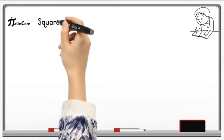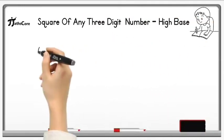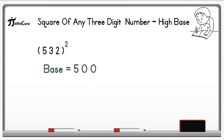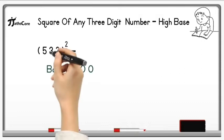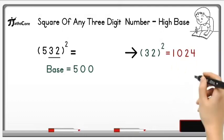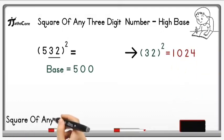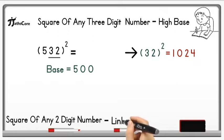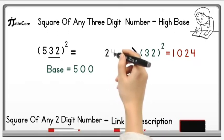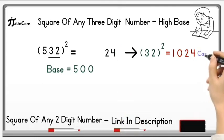Let's take one more example on it. Example is 532 square. For 532, base is 500. So first of all, take unit and tens place digit together and find out square of it. So 32 square is equal to 1,024. If you don't know Vedic Math technique for finding square of any two-digit number, then please check description box where I have given a link. So from 1,024, we have to write down 24 in the product and take 10 as a carry.